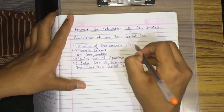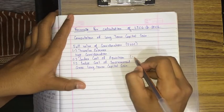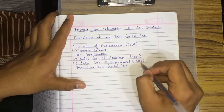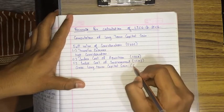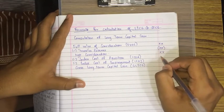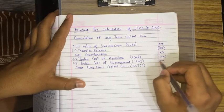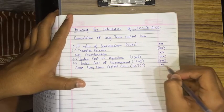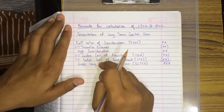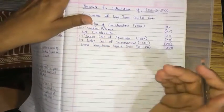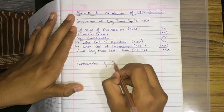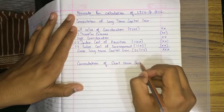The short forms for this are: FVOC (Full Value of Consideration), Transfer Expenses, ICOA (Index Cost of Acquisition), ICOI (Index Cost of Improvement), giving you Gross Long Term Capital Gain. Now, the format for computation of Short Term Capital Gain.